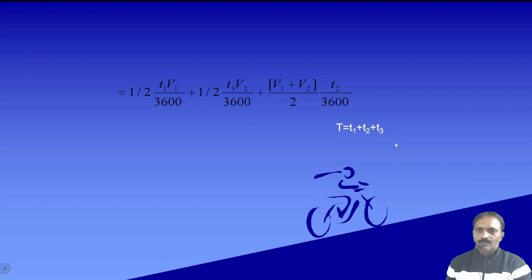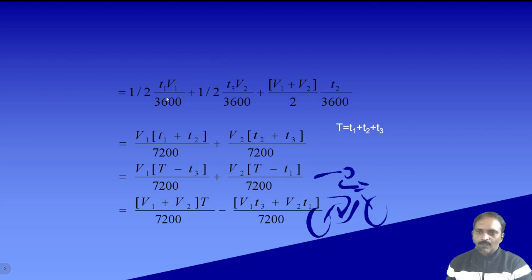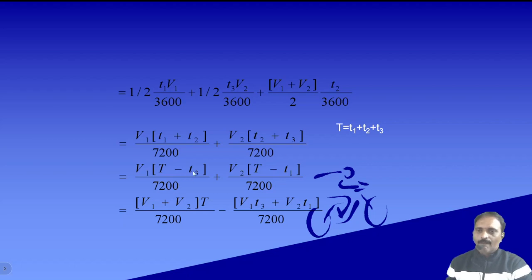The total time is t1 plus t2 plus t3. Simplifying by factoring out 1/7200, and taking v1 common from the first two terms and v2 from the last two, we get: D = (1/7200) times [v1(t1 + t2) + v2(t2 + t3)]. Then substituting t1 + t2 = T - t3 and t2 + t3 = T - t1, we simplify further.